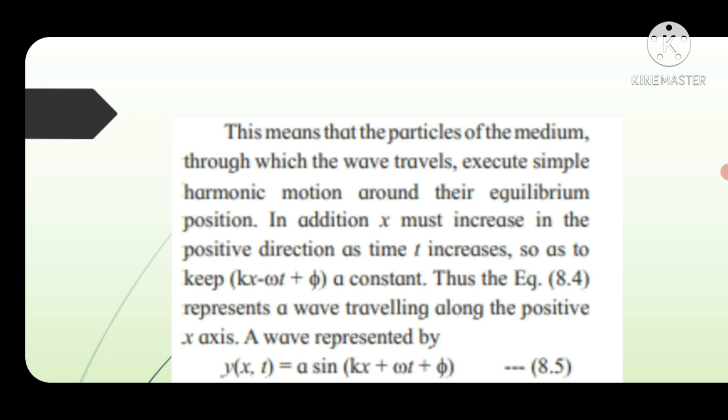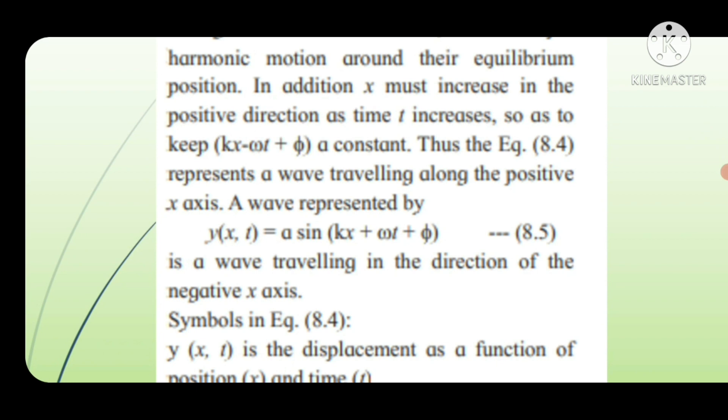In addition, x must increase in the positive direction as time t increases, so as to keep (kx - ωt + φ) a constant. Thus, equation 8.4 represents a wave traveling along the positive x axis.